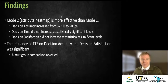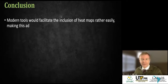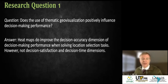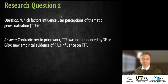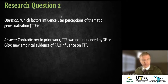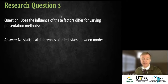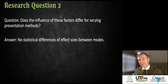Reviewing the findings: mode two with the heat map was more effective than mode one. Most interestingly, accuracy increased from 37% to 50% — and while that's an increase, it's shocking how bad 50% is. People spent 20 minutes on this and still half got it wrong. Decision time was not impacted, and decision satisfaction did not increase between the two modes. In the multi-group analysis, despite different outcomes, the models behaved identically between the two modes statistically.